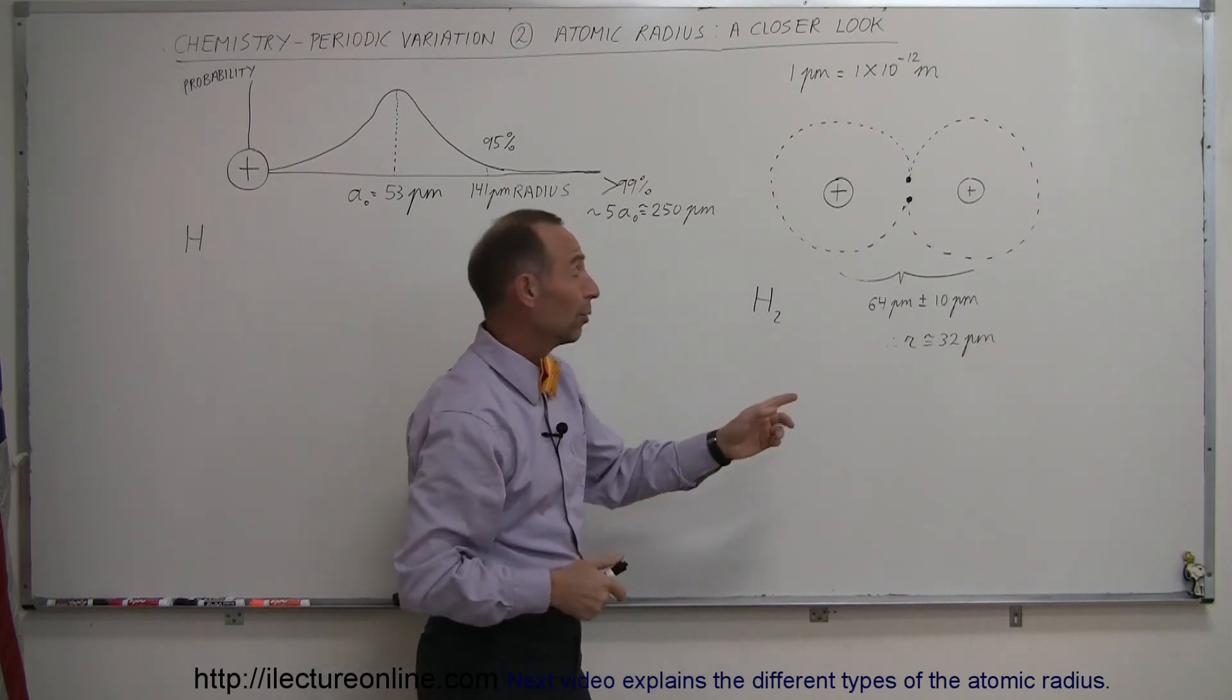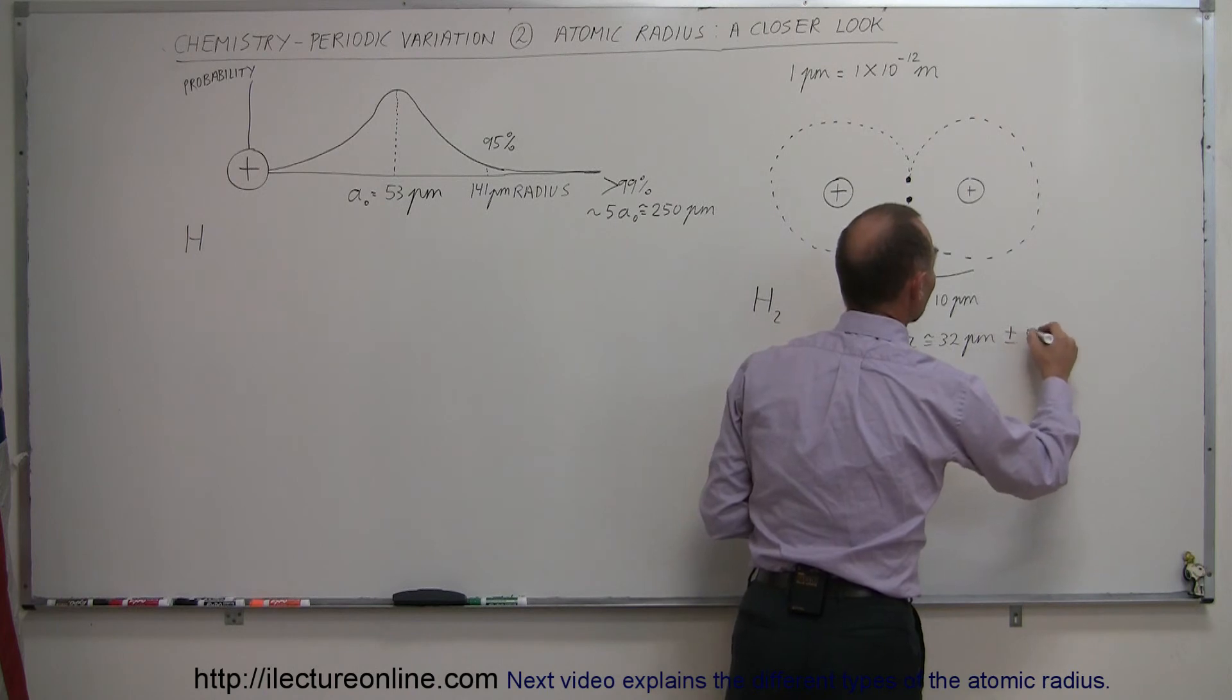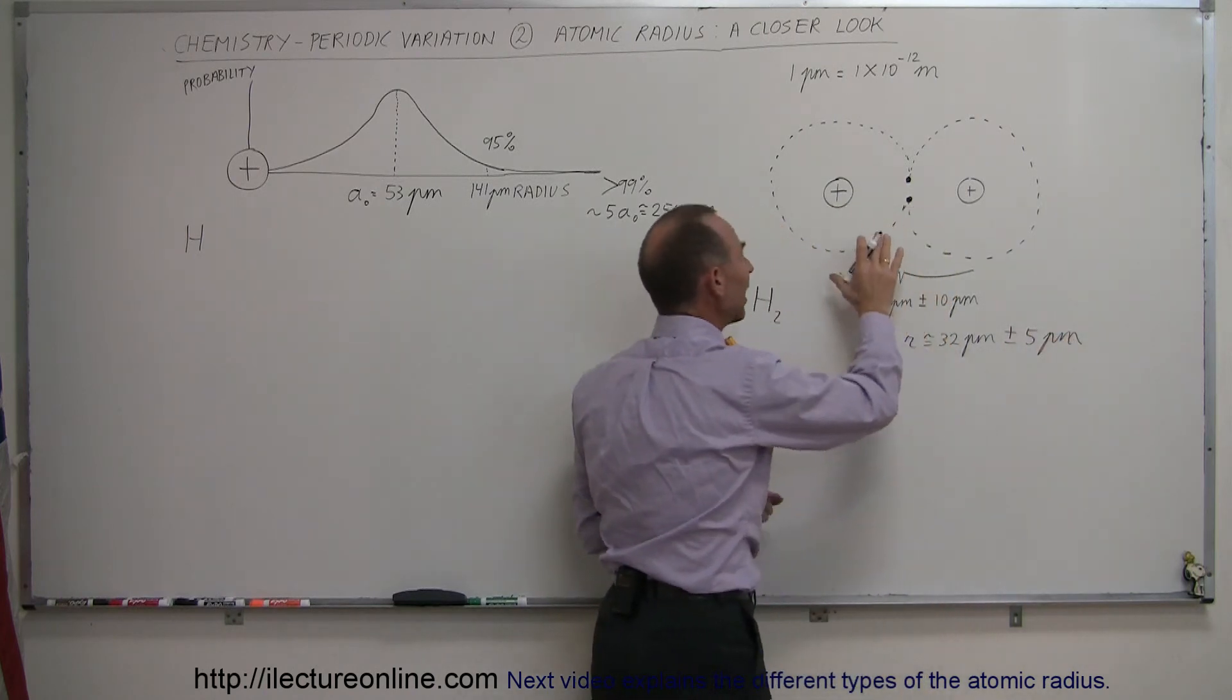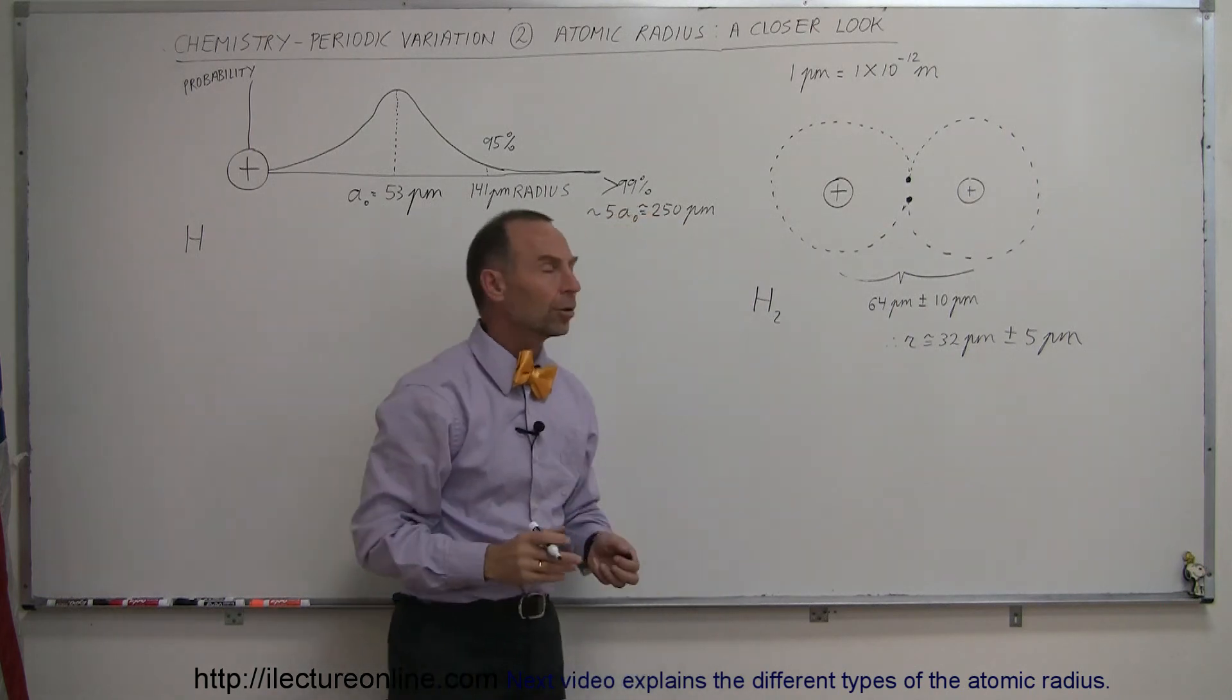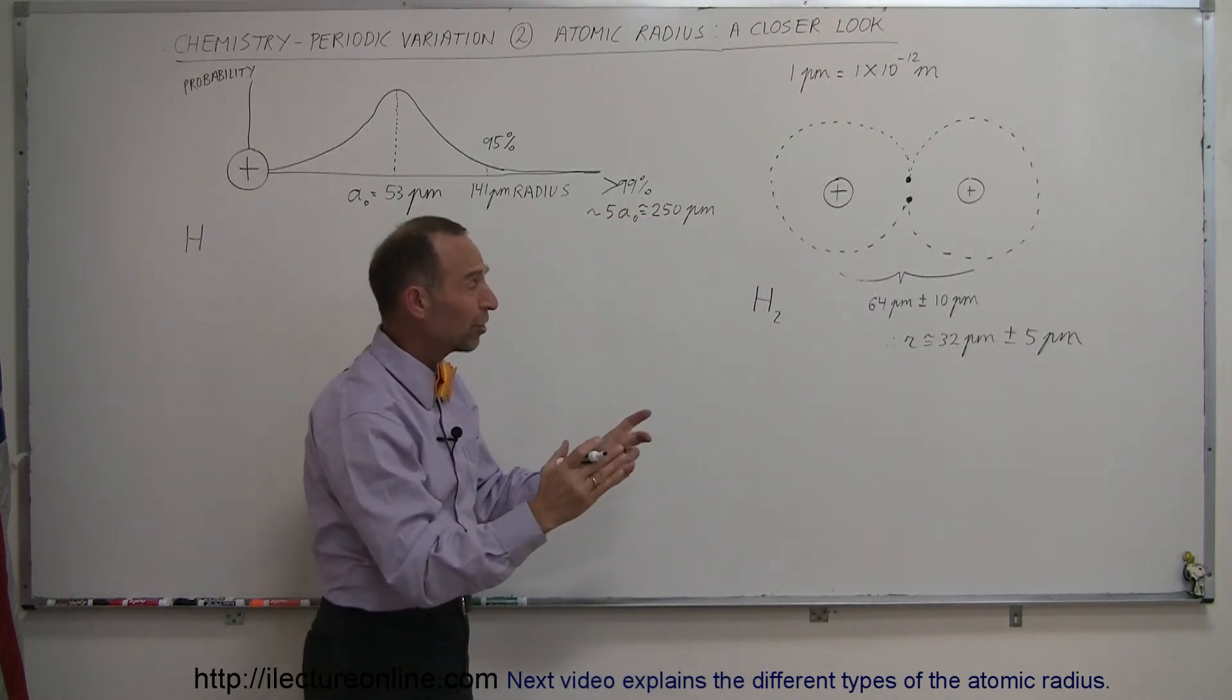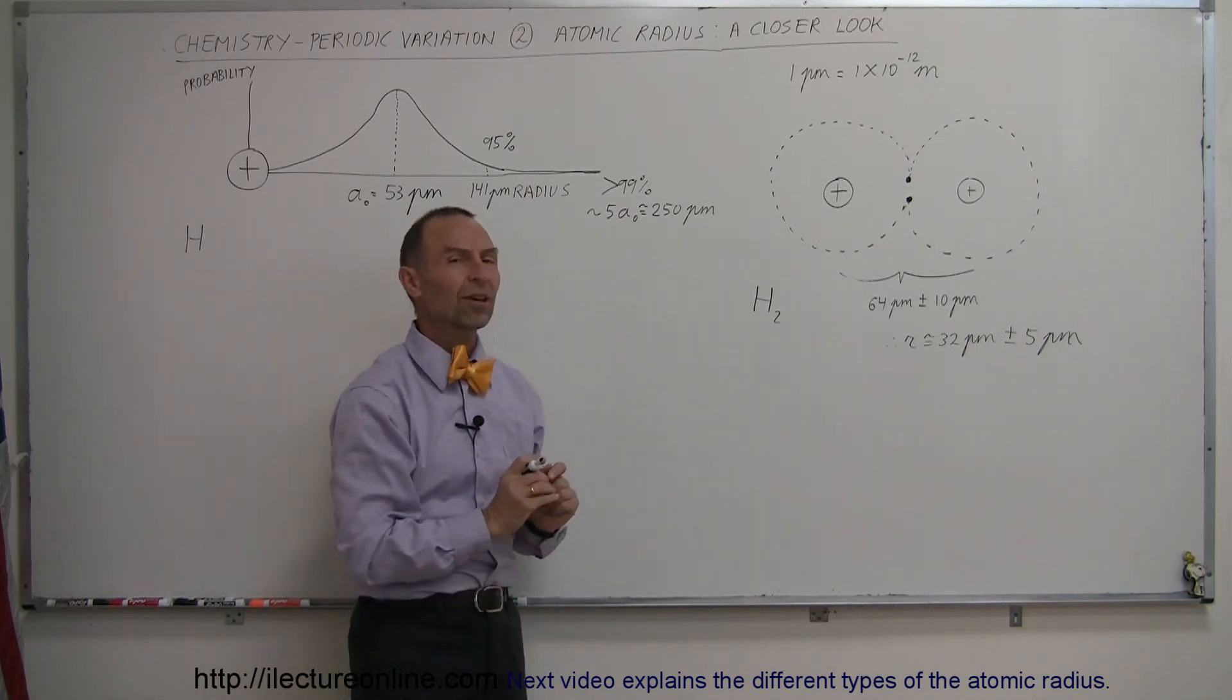So, there's a lot of play, which means that the radius can be determined to the nearest plus or minus 5 picometers. So, in other words, the radius of a hydrogen atom in a diatomic molecule like that can be anywhere from 37 picometers down to 27 picometers. And so, again, realize that it's not that deterministic.